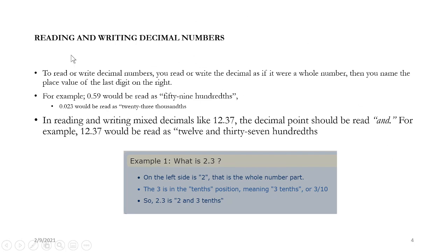The next thing we look at is reading and writing decimal numbers. To read or write decimal numbers, you read or write them as if they were whole numbers, then you name the place value of the last digit on the right. For example, 0.59 — the number we can see is 59. The place value: 5 is tenths, 9 is hundredths. So this would be read as fifty-nine hundredths.